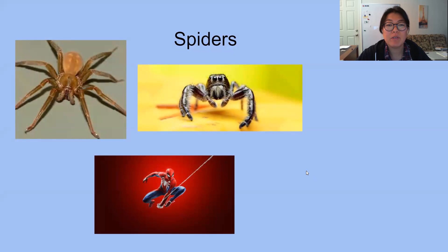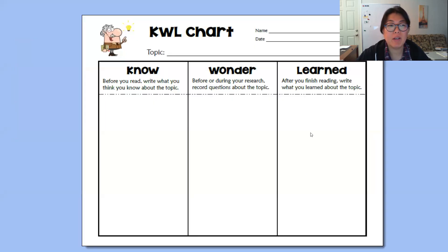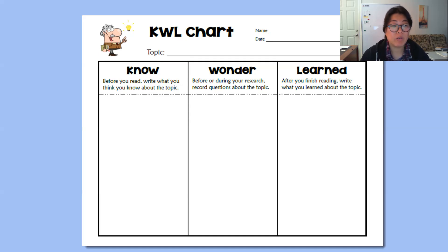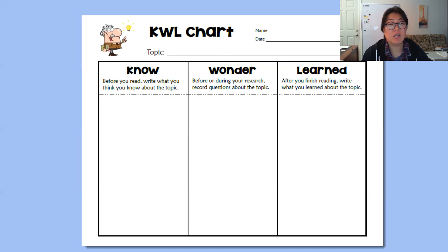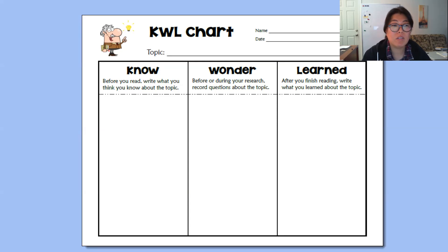Just like in the classroom, we usually have a KWL chart. First, what do we know about spiders? Before you read or research any topic, you write what you think you know. Press pause, get your notebook and pen, and write all the things you know about spiders. Then write what you wonder — questions like: what do spiders eat? Where do spiders live?